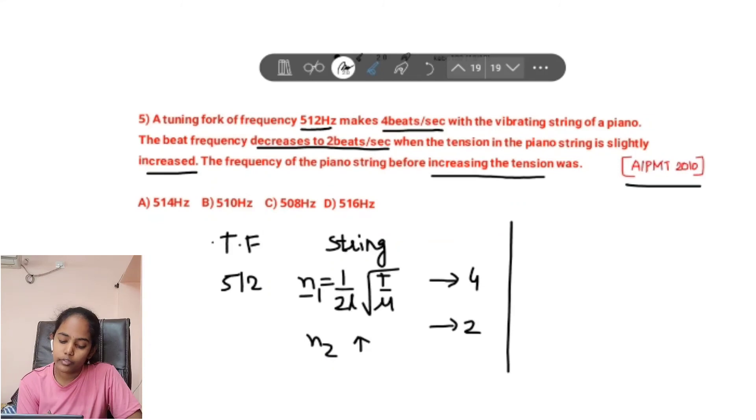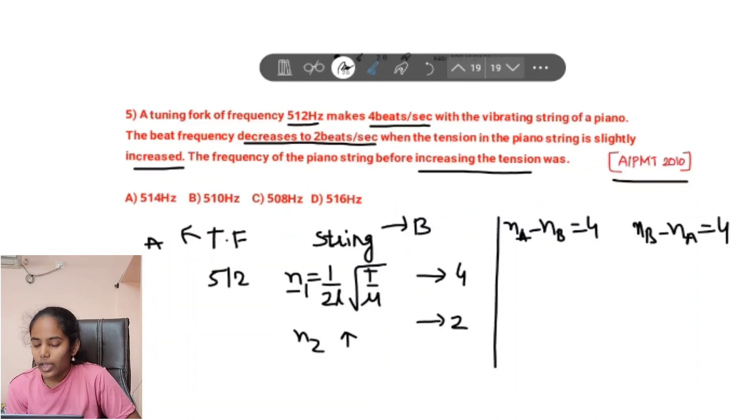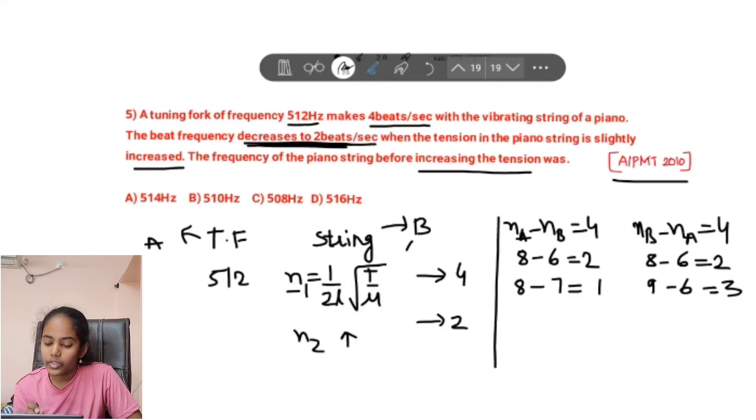So let us take tuning fork as A and string as B. nₐ minus n_b is 4. As I said in the previous video, write 8 minus 6 equals 2. Now the string B tension is increased, so frequency gets increased. So 6 becomes 7 and 8 becomes 9. Write 8 as it is and 6 as it is. So 8 minus 7 is 1 and 9 minus 6 is 3. They are saying the beat frequency is decreased to 2 beats per second. So we have to take the decreased case.